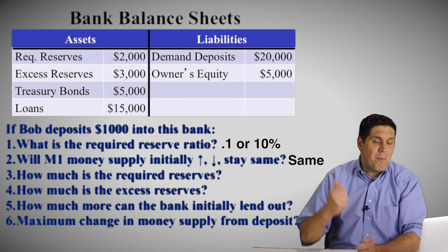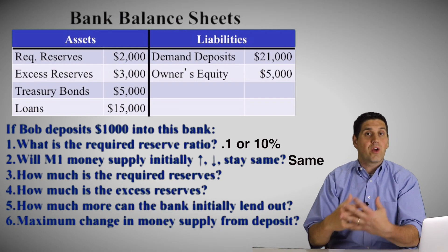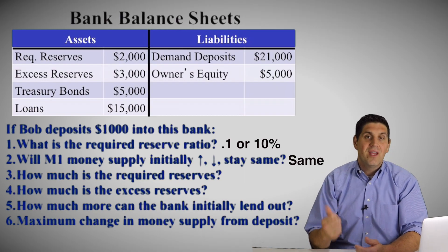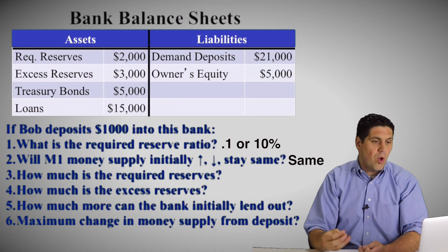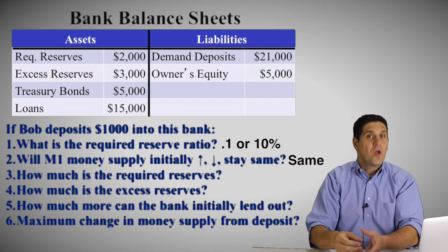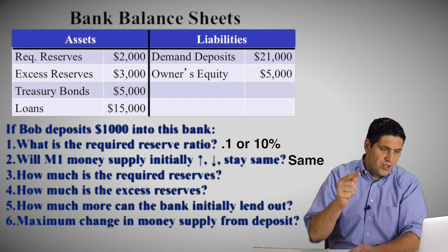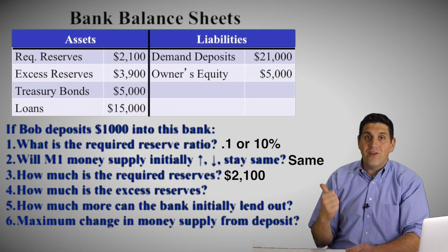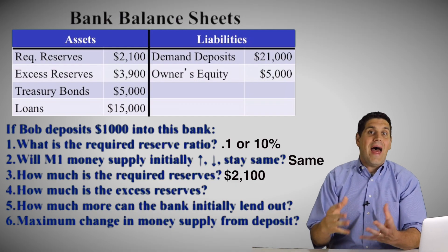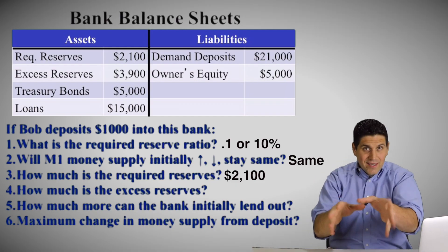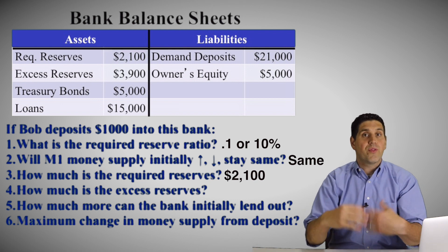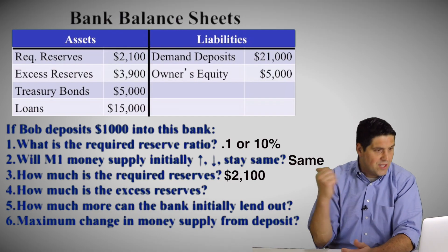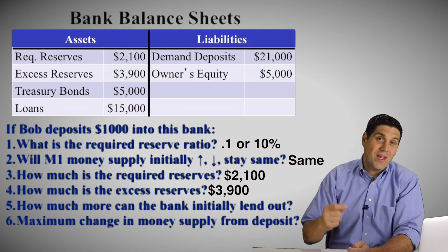First thing to notice: demand deposits is going to go up. Instead of being $20,000, now it's going to go to $21,000 because he deposited $1,000 in the bank. The owner's equity didn't actually change. Now this bank needs to hold a portion of that $1,000 — how much? $100. So the required reserve now is going to be $2,100. That's how much this bank has to hold now that they have $21,000 in demand deposits. That tells you how much the excess reserves are — before they were $3,000, but now they're free to loan out another $900, so the grand total for excess reserves is $3,900.